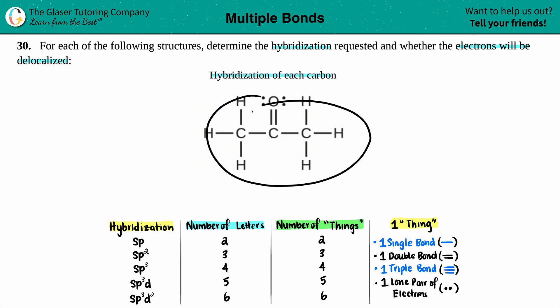It's lovely that they gave us the drawing. So all we have to do is look at this Lewis structure and find the hybridization of each carbon. There's three total carbons here - one here, one here, and one over here.